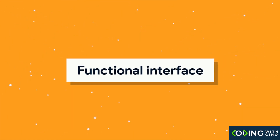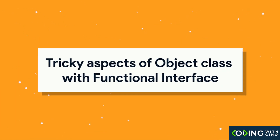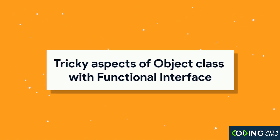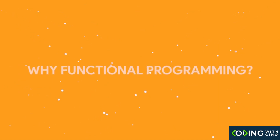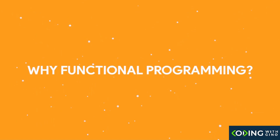We'll start by laying a strong foundation. We'll understand what a functional interface is and how it differs from the traditional interface. We'll inspect some tricky aspects of the object class with functional interface. Then I'll explain why functional programming came into existence in spite of Java supporting the immensely popular object-oriented programming.